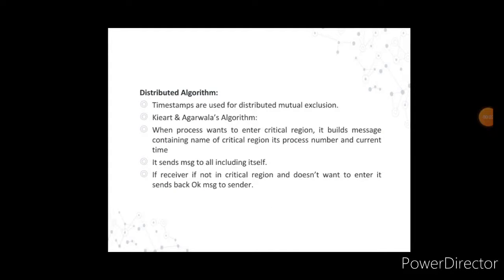The next algorithm is the distributed algorithm, where timestamps are used for distributed mutual exclusion. This is based on Ricart and Agrawala's algorithm. When a process wants to enter a critical region, it builds a message containing the name of the critical region, its process number, and the current timestamp, and sends it to all processes including itself. If the receiver is not in the critical region and does not want to enter it, it sends back an OK message. If the receiver is already in the critical region, it does not reply but queues the request.